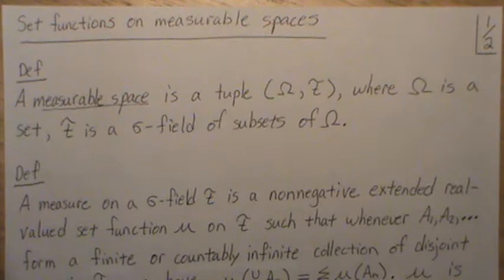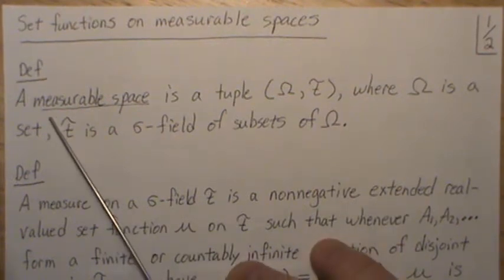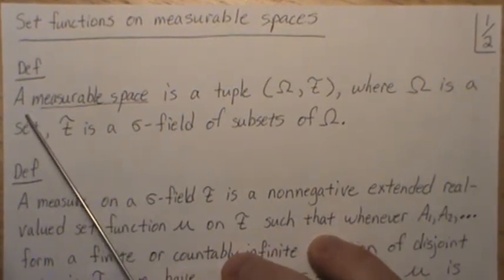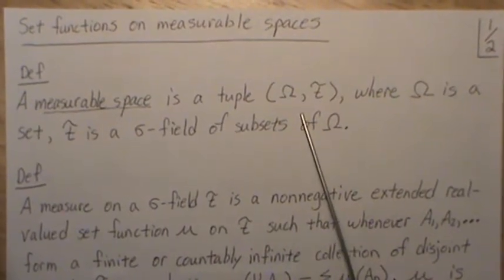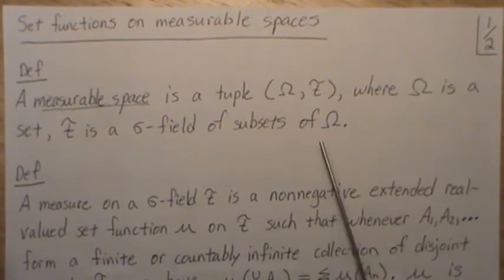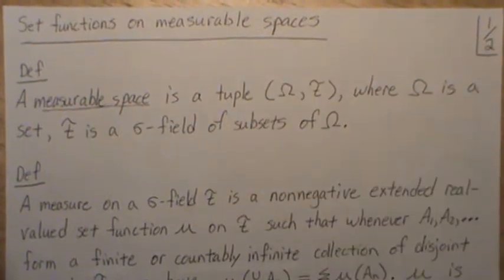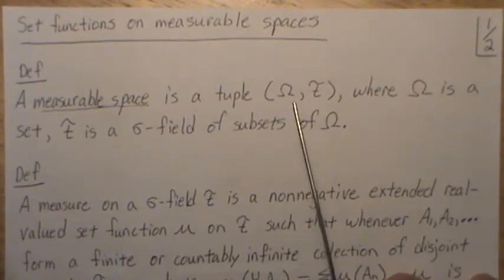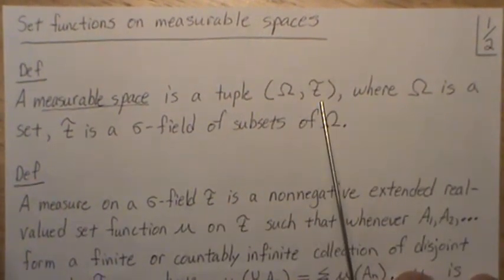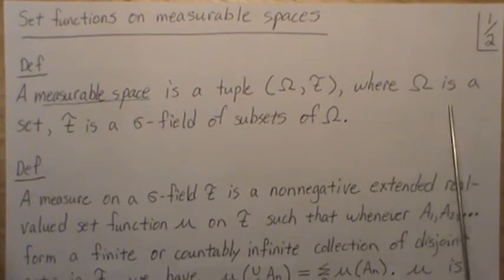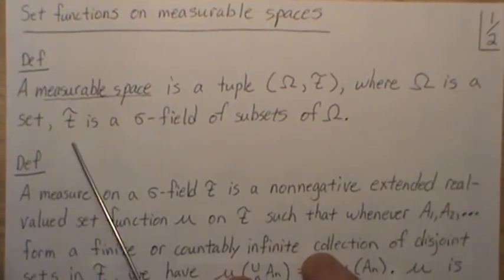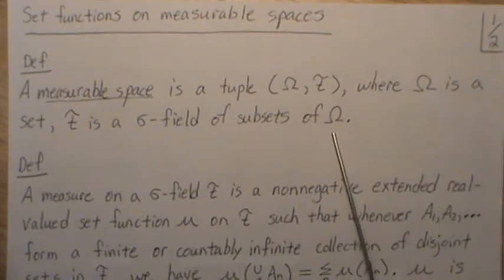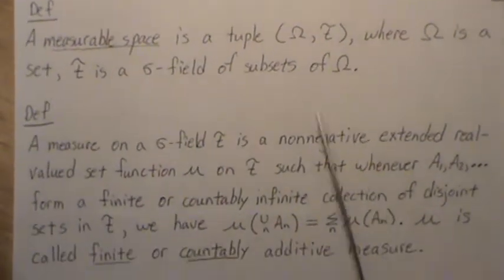It's not possible to go back and redefine every term that we use in an upcoming video. So here, as a reminder from the previous video, a measurable space is a tuple (Ω, F), where Ω is a set and F is a sigma field of subsets of Ω.